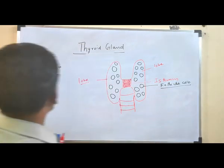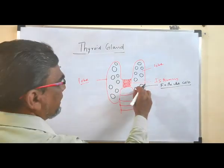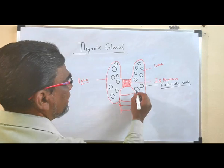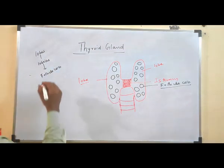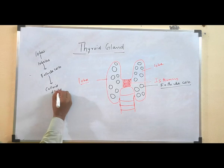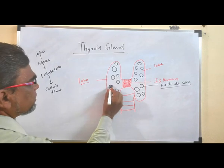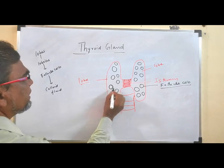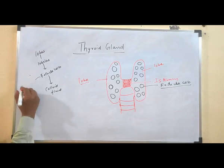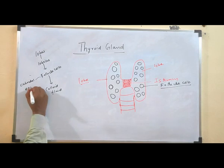Inside the follicle cells, there is a cavity — a lumen. This lumen contains a special fluid called colloid. These follicle cells are lined with a special type of cells called cuboidal epithelial cells.